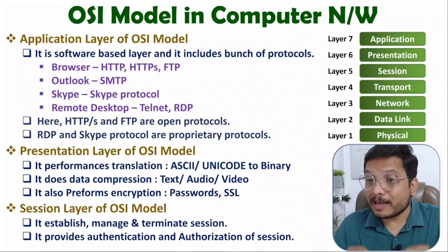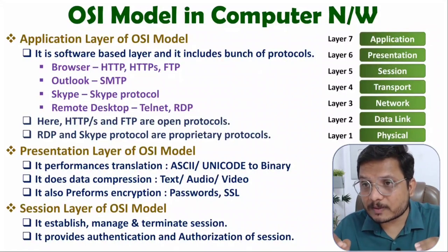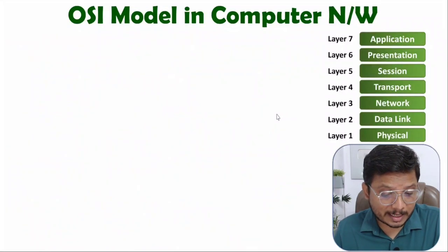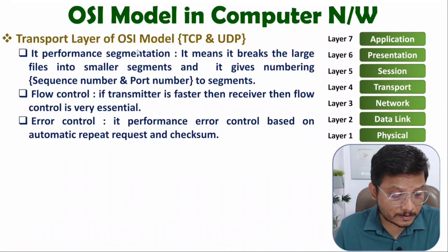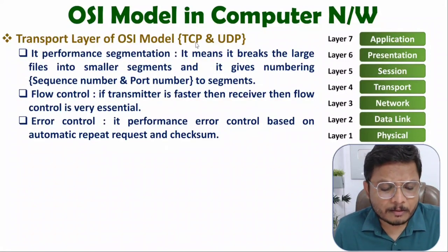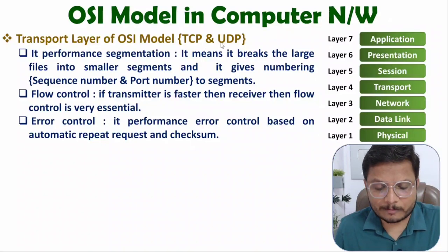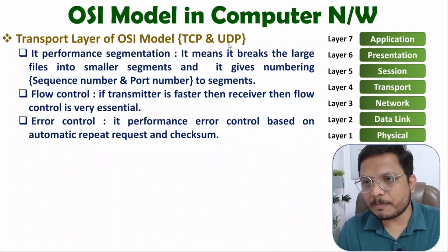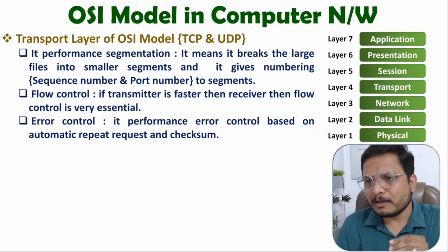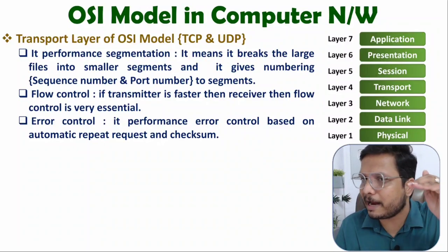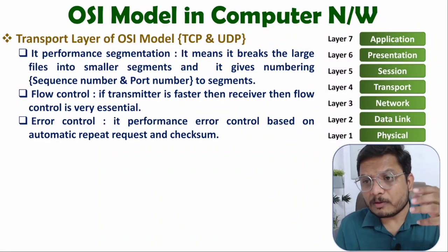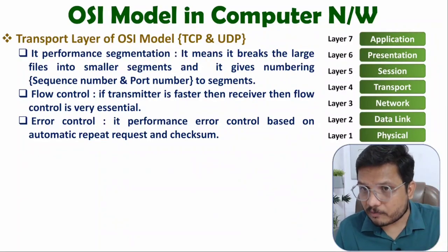Now the very essential part — the transport layer. The transport layer of the OSI model uses TCP or UDP protocol. I'll make a separate video about TCP and UDP, but just consider that TCP and UDP are handled at the transport layer.